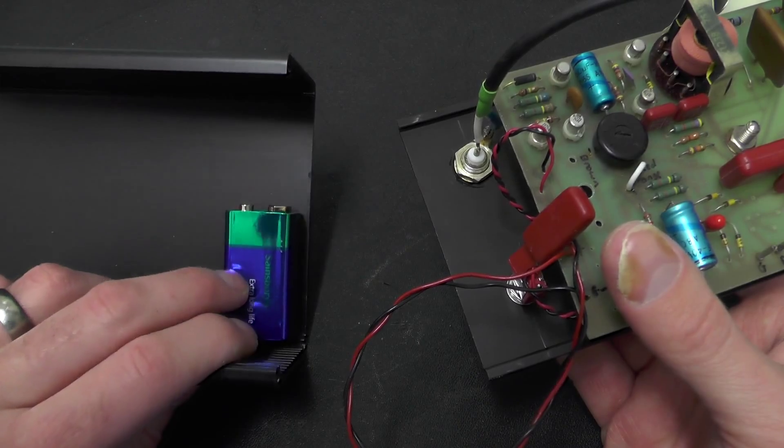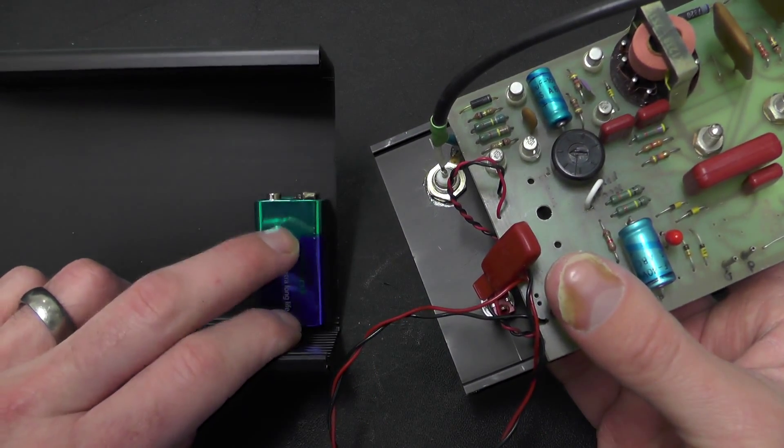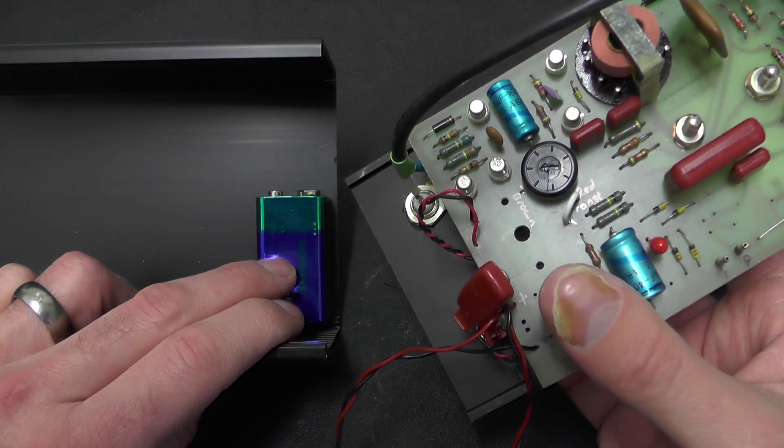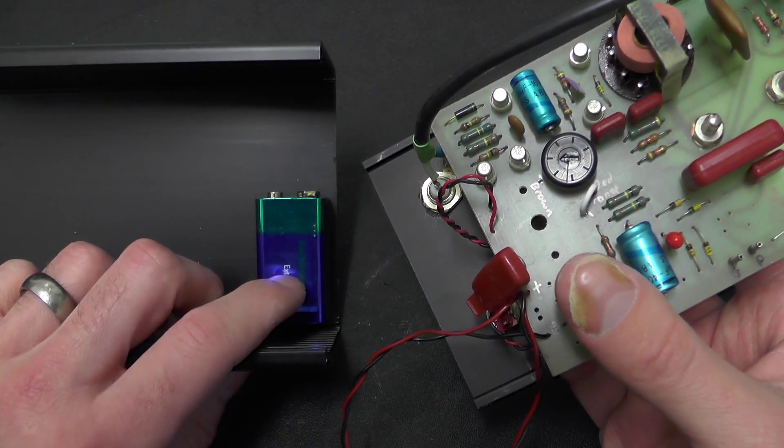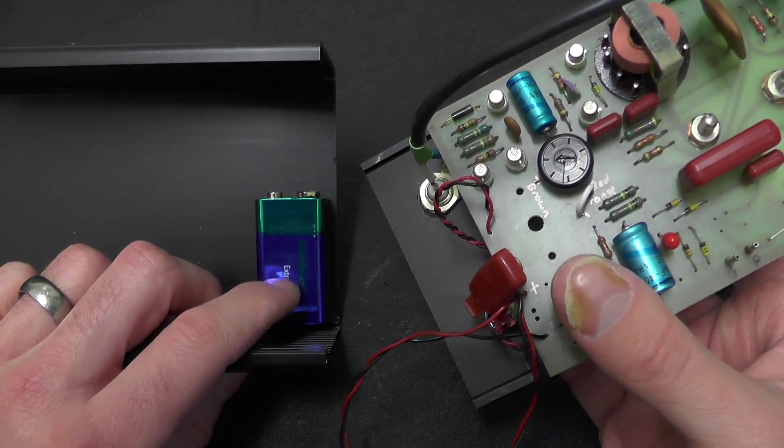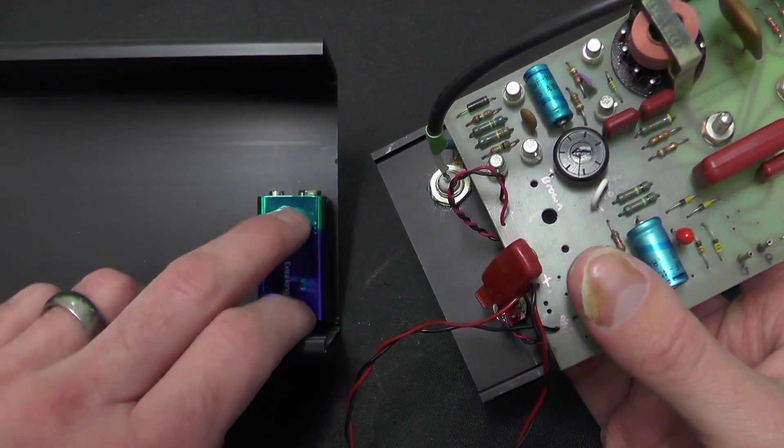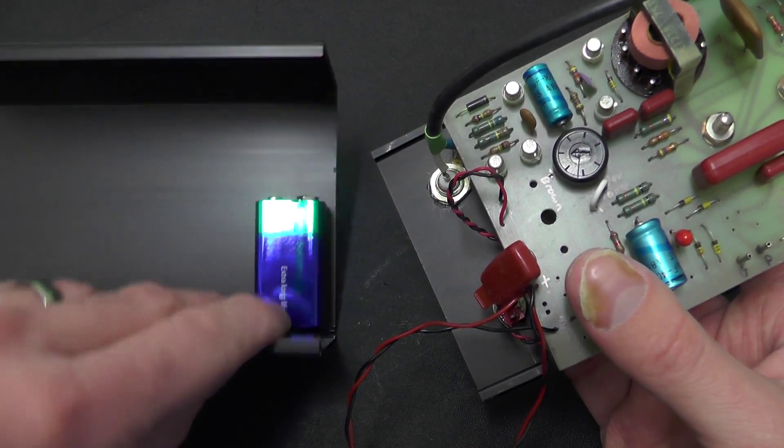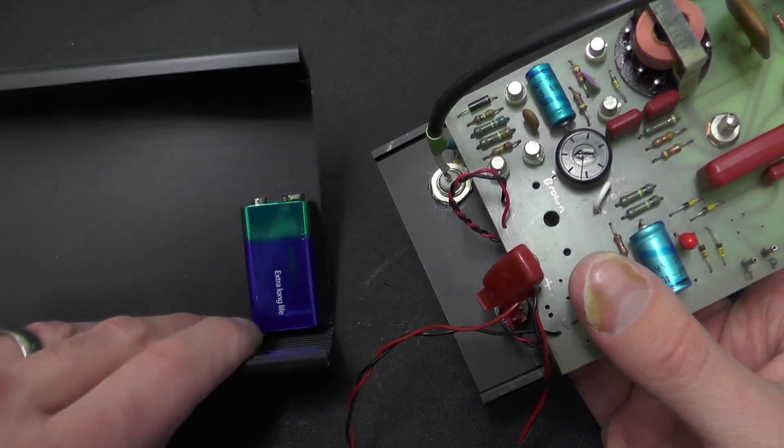The only issue I've got with the 9 volt battery is the voltage on the Geiger tube starts to fall off when the input voltage gets to about 8.5 volts. So I'm not really going to get the full capacity out of these 9 volt batteries. So I'll probably end up swapping this out for something else.